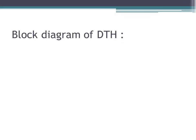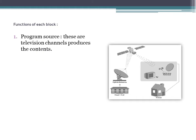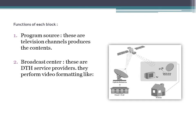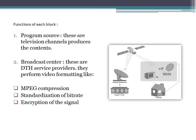Let's understand the block diagram of DTH and the functions of each block. Program source: these are television channels which provide the content — Sun, Sony, Zee, etc. are the program sources. Broadcast centers are essentially the DTH service providers. They perform the following: video formatting, MPEG compression, standardization of bit rate, and encryption of the signals.